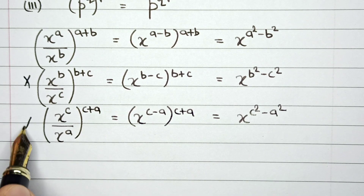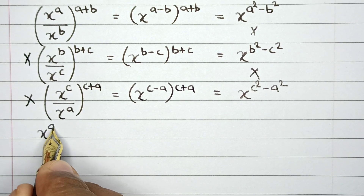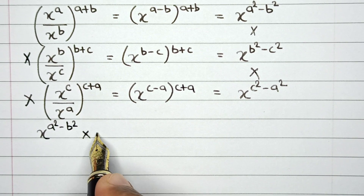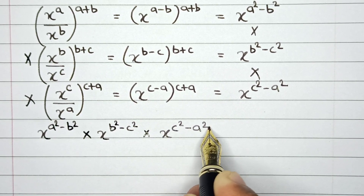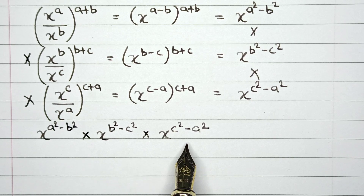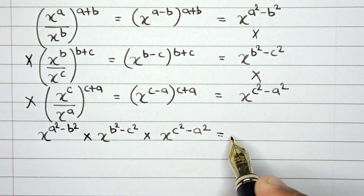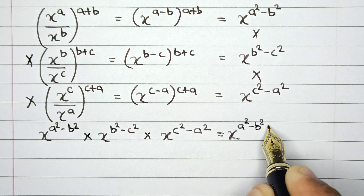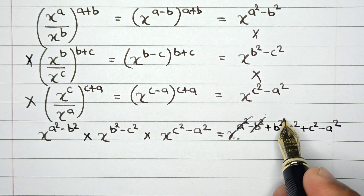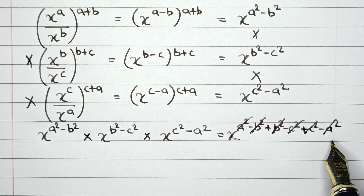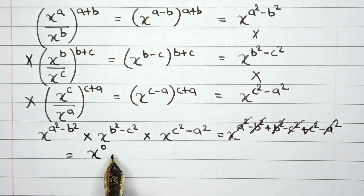In the original question all three numbers are multiplied, so these three results are also multiplied: X raised to the power A squared minus B squared, multiplied by X raised to the power B squared minus C squared, multiplied by X raised to the power C squared minus A squared. Since the base is the same, the powers get added, giving X raised to the power of A squared minus B squared plus B squared minus C squared plus C squared minus A squared. All the powers cancel out, leaving X raised to the power 0, and any number raised to the power 0 equals 1. So the final answer is 1.